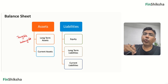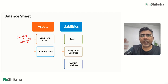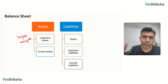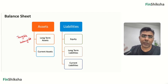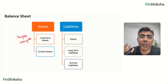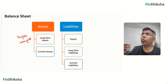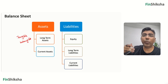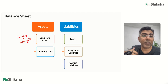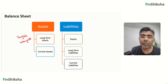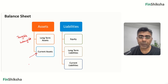Current assets are assets that generate cash for the business within one business cycle or a year. This could include things like raw material or inventory, cash balances, or amounts where you've sold something to somebody but not yet received the money — something called accounts receivable. All of those would be termed under the current assets of the company.